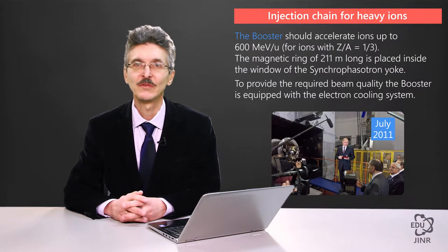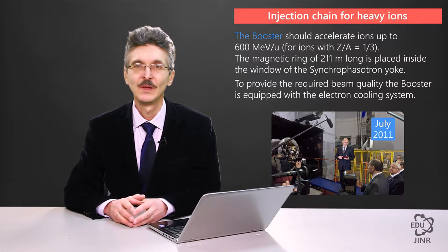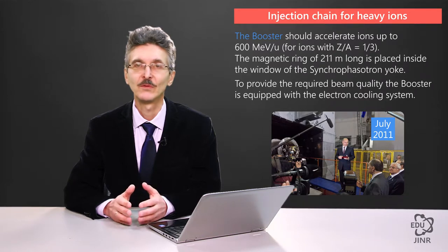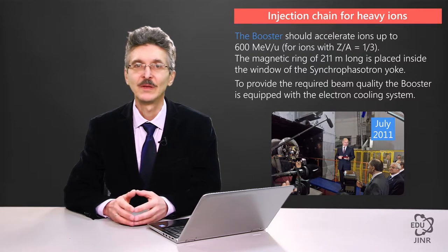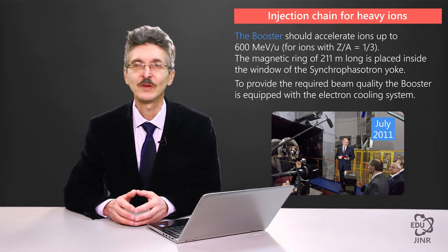The next element in the heavy ion injection chain is the booster, into which gold ions from the linear accelerator are injected. It is a small superconducting synchrotron tasked with the acceleration of partially stripped ions — that is, ions that retain electrons — under high vacuum conditions. Such high vacuum conditions, with low pressure in the vacuum chamber, have not been achieved before in Russia on such a massive scale.